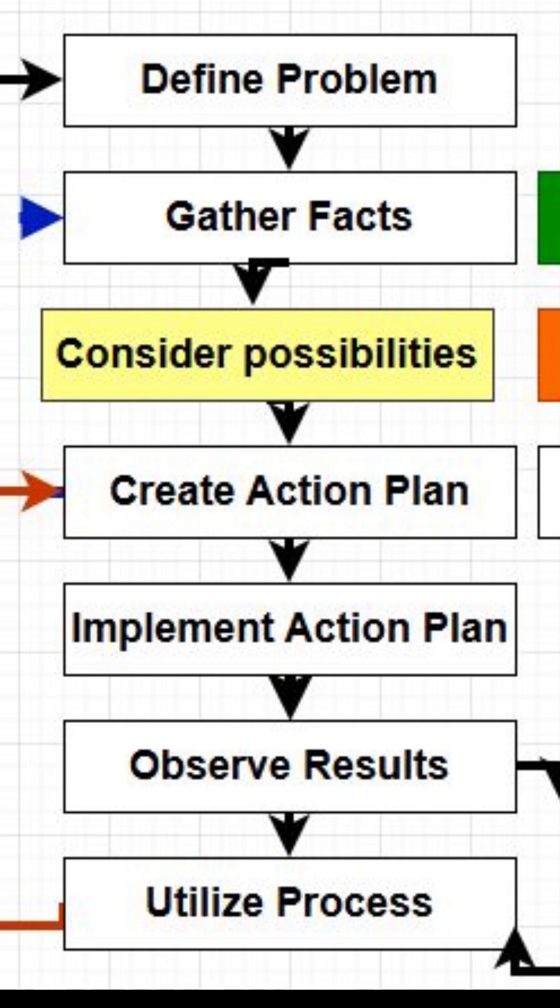Cisco's 8-step troubleshooting method. Cisco gives us a simple and powerful 8-step formula: 1. Define the problem. 2. Gather detailed information. 3. Identify probable causes. 4. Create a logical plan. 5. Implement the plan. 6. Observe the results. 7. If needed, repeat the process. 8. Document everything. This is not just a list — it's a mindset that turns chaos into clarity.